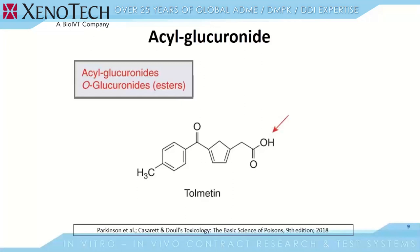Acyl glucuronides are metabolites of special concern due to their reactivity, and several have been identified as CYP2C8 inhibitors. Tolmentin is an example of a molecule whose acyl glucuronide is highly reactive. The acetic acid portion of this molecule has an unsubstituted carbon number 2. When the half-life of this molecule was determined in vitro, it was only about 16 minutes.